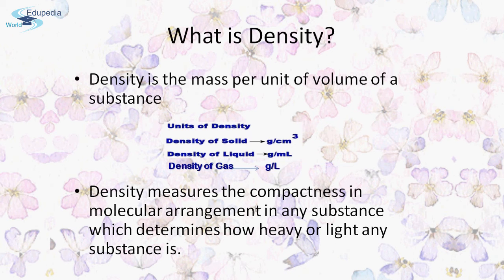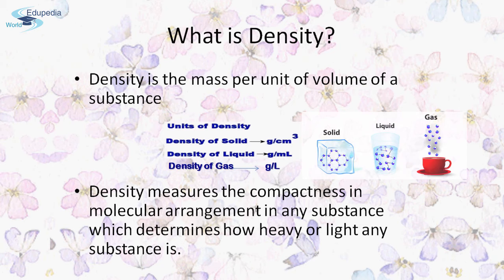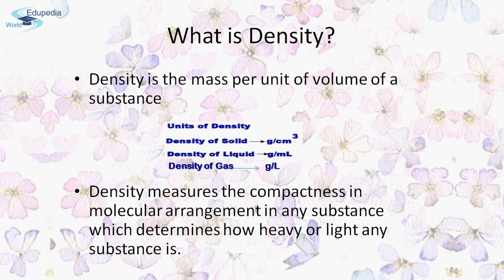First, let's find out what density is. Density is defined as mass per unit volume of a substance. It is a physical property of matter — a physical property can be measured without changing the chemical identity of the substance. Since pure substances have unique density values, measuring the density of a substance can help identify that substance.